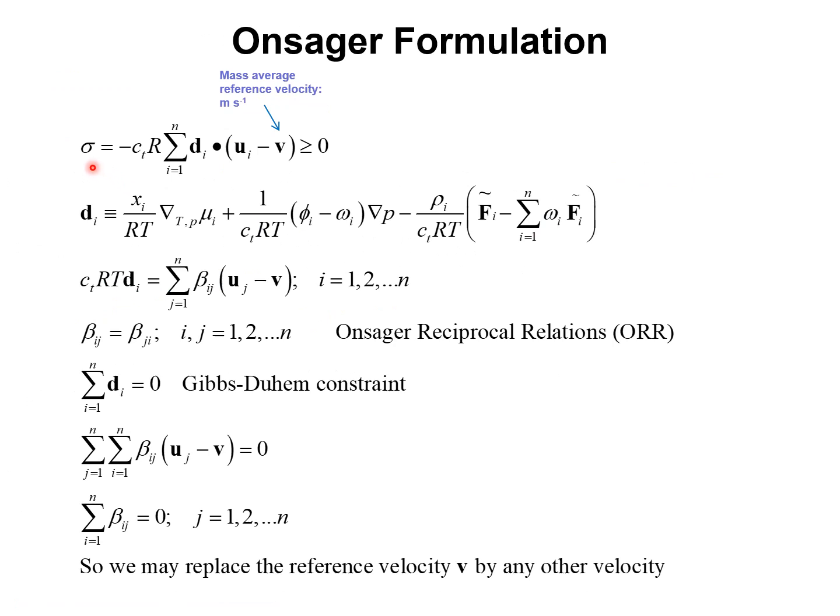The rate of entropy production is the sum of the driving forces d sub i times the velocity differences, the velocity differences between component i and the mass average reference velocity. If this term is multiplied by the molar concentration of species i, we obtain the molar fluxes. So essentially, the rate of entropy production is the sum of fluxes and driving forces. We remind ourselves that the driving force for species i consists of three separate terms: the contribution of the chemical potential gradient, the contribution of the pressure gradient, and the influence of external body forces such as centrifugal forces and electrostatic potential gradients.